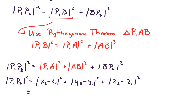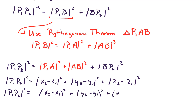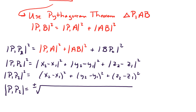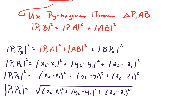This boils down to X2 minus X1 squared, plus Y2 minus Y1 squared, plus Z2 minus Z1 squared — we can drop the absolute values since we're squaring. Then solving for the length P1P2, we take the square root of both sides. That does introduce a plus or minus, but since this is a magnitude — the length of a side — it cannot be negative, so it's just the positive root: the square root of (X2 minus X1) squared plus (Y2 minus Y1) squared plus (Z2 minus Z1) squared. And that completes the proof of our theorem. Thank you.